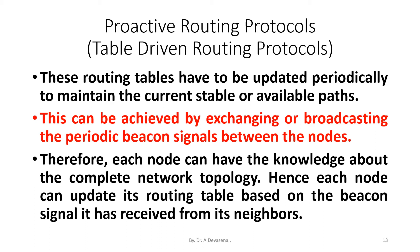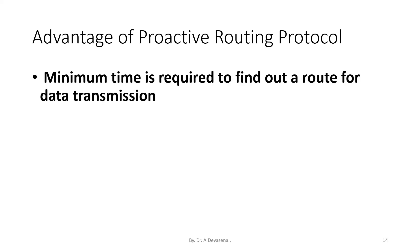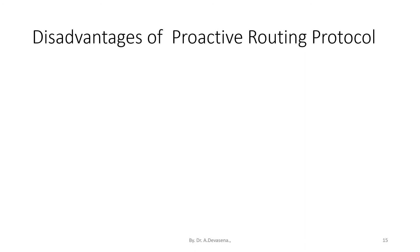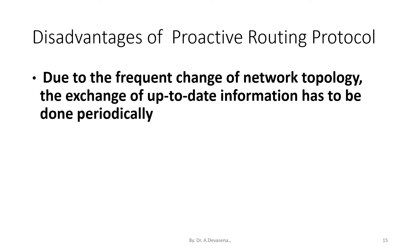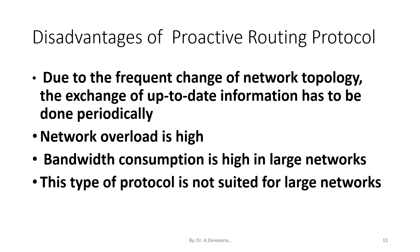Each node updates its routing table based on the beacon signal received from neighboring nodes. These routing tables are updated periodically by exchanging or broadcasting periodic beacon signals between nodes. The advantage of proactive routing protocol is that minimum time is required to find a route for data transmission. Disadvantages include: due to frequent changes in network topology, up-to-date information must be exchanged periodically; network overload is high; bandwidth consumption is high in large networks; and this type of protocol is not suited for large networks.